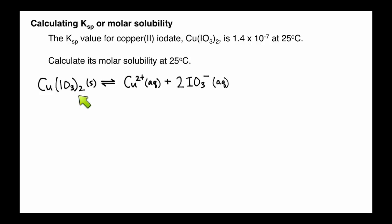If you look here, it's got IO3 sub 2, meaning we've got two iodates per copper iodate. And so we've got 2 IO3-, and that's aqueous.